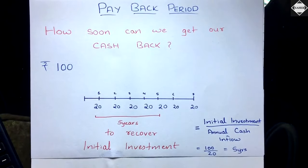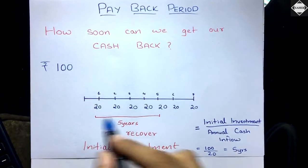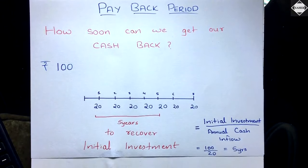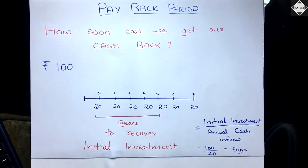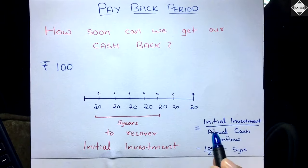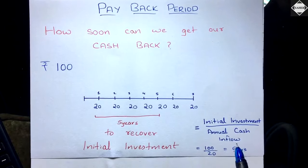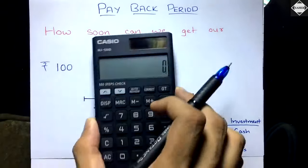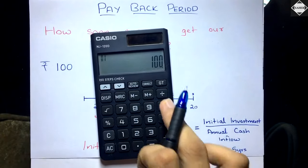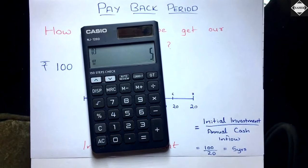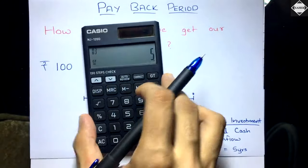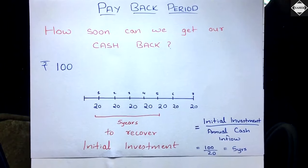In simple payback, what we used to do was calculate how much time the project will take to recover its initial investment. For example, if a project has an initial investment of 100 and future cash inflows of rupees 20 at the end of each year (constant), you use the formula: initial investment divided by annual cash inflow. So 100 divided by 20 equals five years — the project takes five years to recover its initial investment.